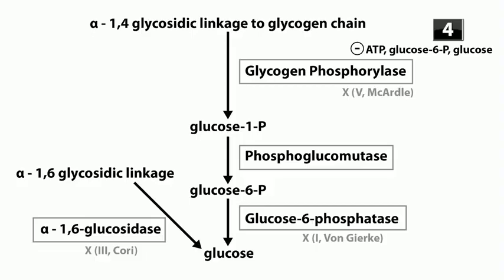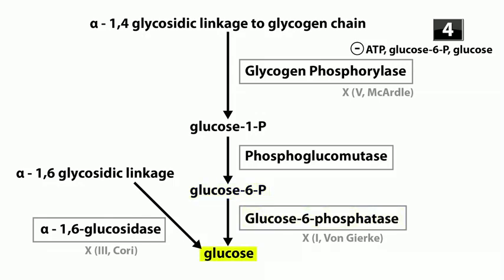The majority of glycogen is composed of alpha-1,4 linkages. The enzyme used to break them down is glycogen phosphorylase, which cuts loose one glucose-1-phosphate molecule. Then phosphoglucomutase converts glucose-1-phosphate to glucose-6-phosphate. Then glucose-6-phosphatase converts it back into free glucose — the same last step we saw in gluconeogenesis, and also the last step in glycogenolysis.